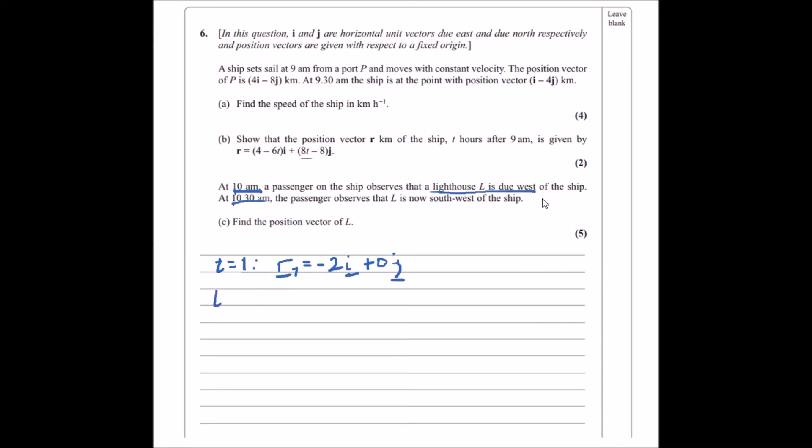Now at 10:30 a.m., which is time 1.5, putting the values here we should get 4 minus 6 times 1.5, which gives us minus 5i, and putting 1.5 here we should get plus 4j.